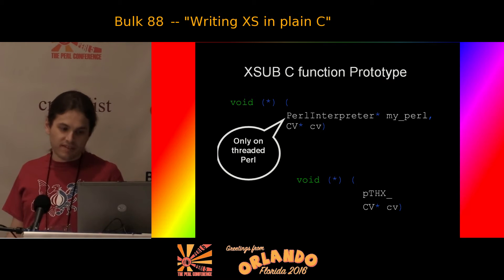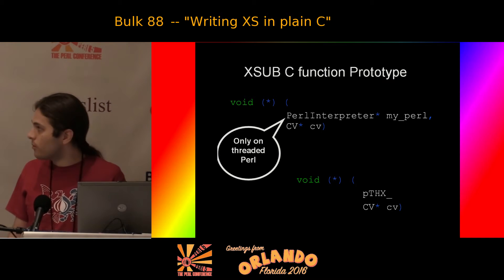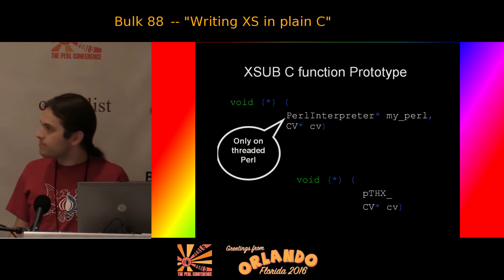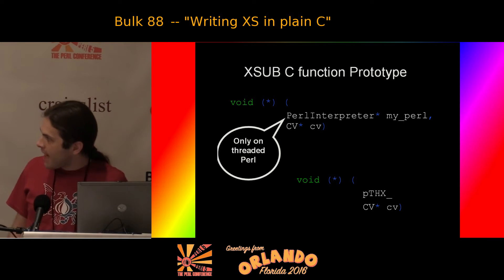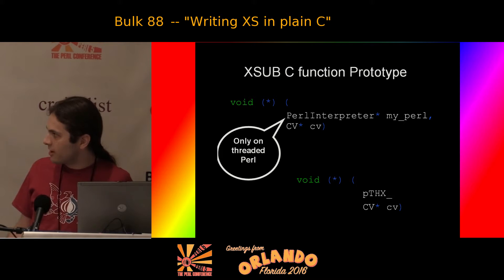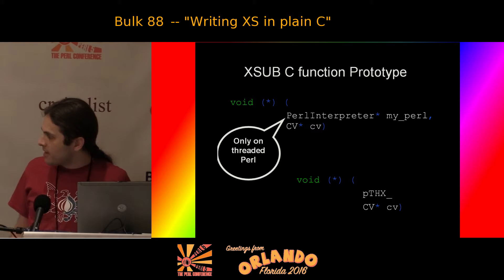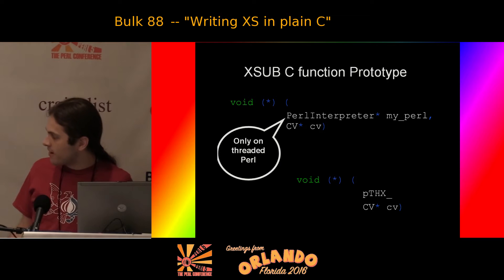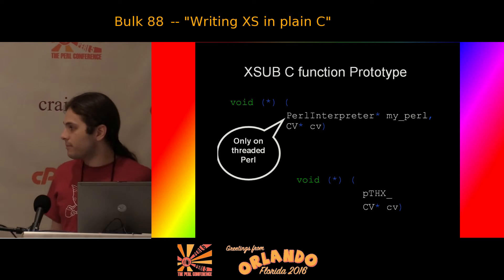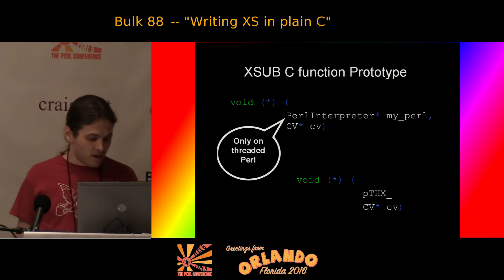Every single Perl XSub must have this prototype. There is one macro I will be using in this talk. The first argument of every XSub is the Perl engine pointer. On unthreaded Perls, the first argument doesn't exist — only the CV argument exists. The pTHX macro allows the engine pointer to be dropped out on unthreaded Perls. I'm going to use the pTHX macro for the remainder of this talk.